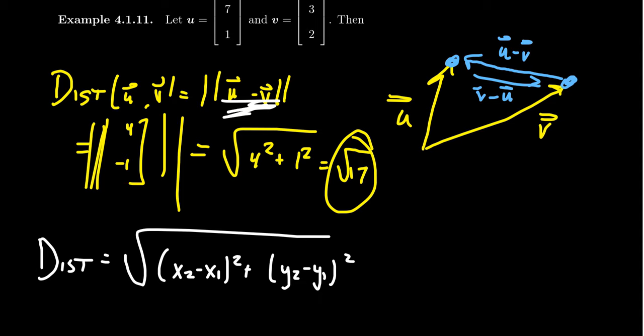Then when you take, because this right here is going to be u minus v dot u minus v, and so when you do this, you're going to be taking the sum of squares, all inside the square root. Don't forget that part.